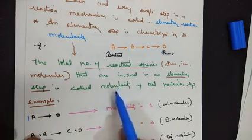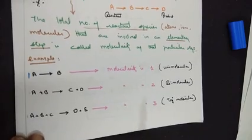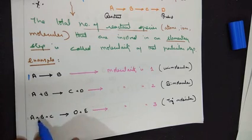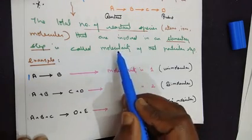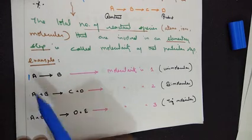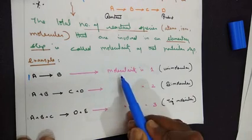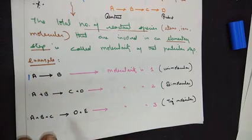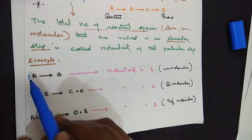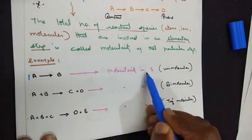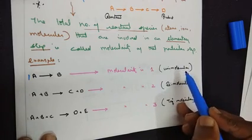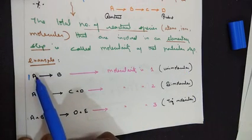Let's understand how to calculate the molecularity in each step. Consider three types of reactions. The first reaction has one reactant, the second has two reactants, and the third has three reactants. Our point of interest is only on the reactant side: A; A plus B; A plus B plus C. For the first reaction, molecularity is 1 because the total number of reactants is only one — one mole of A gives one mole of B. Hence the molecularity is 1, and in another term we call this a unimolecular reaction.